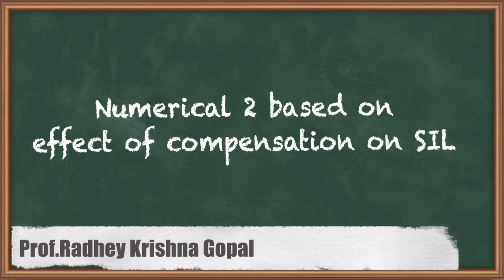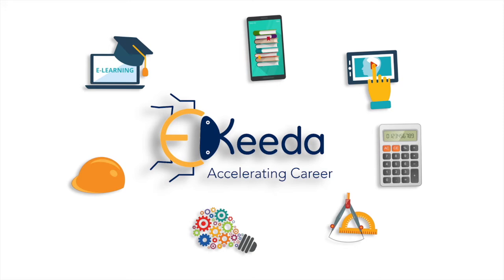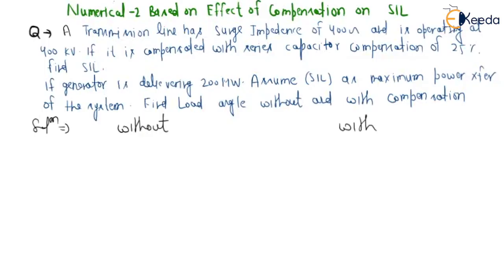Now we are going to solve numerical number two based on effect of compensation on surge impedance loading. The given question is: a transmission line has surge impedance of 400 ohm (Zs = 400 ohm) and is operating at 400 kV (Vs = 400 kV).